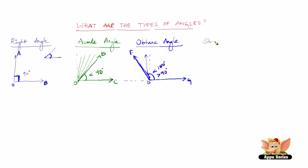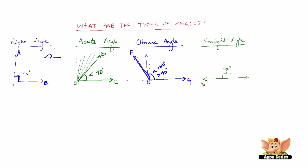The next one is called the straight angle. A straight angle is an angle which is exactly equal to 180 degrees. We know that one side is 90 degrees and the other side is also 90 degrees, so when you add 90 and 90 you get 180 degrees. This can be named as angle GOF, which equals 180 degrees, and it can also be read as angle FOG.